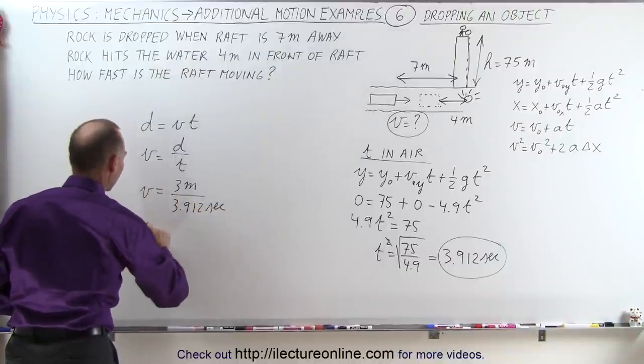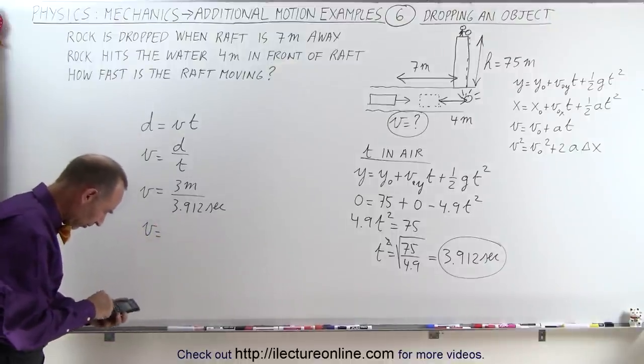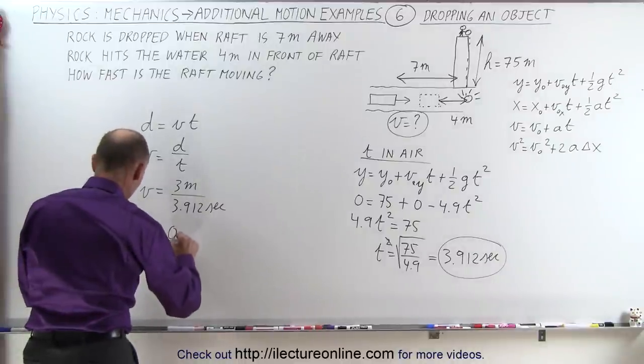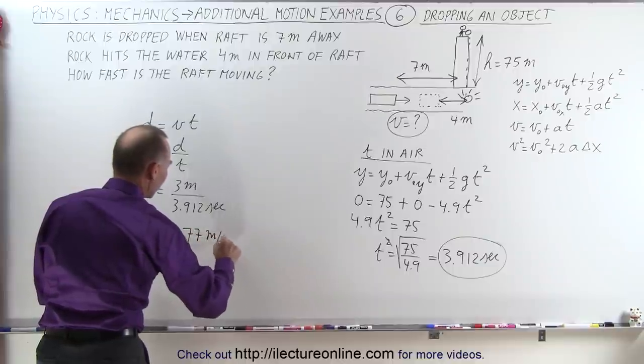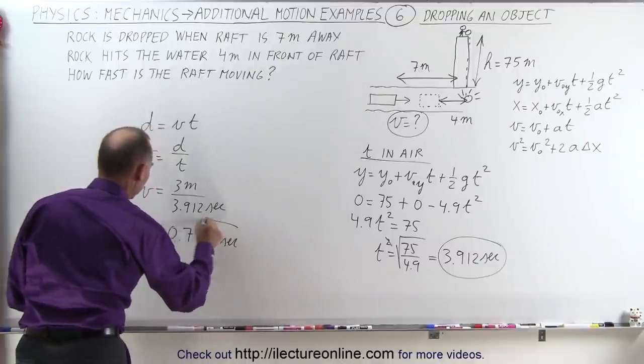And so the velocity therefore is 3 divided by 3.912, which equals 0.77 meters per second to two decimal places.